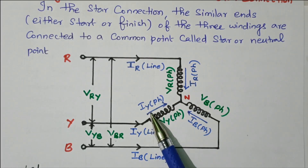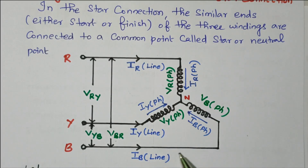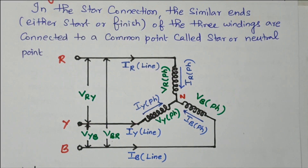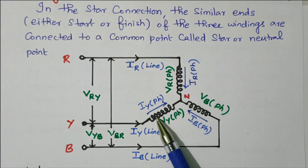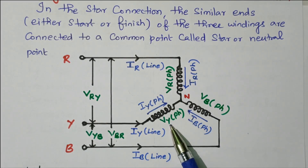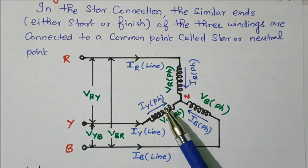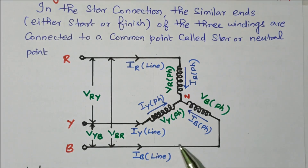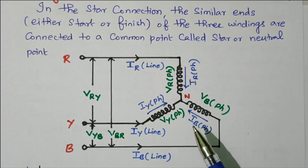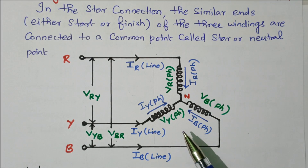Similarly, IY phase and IB phase correspond to their respective line currents. In all cases, line current is equal to phase current. For voltage: VRY is the vector sum of VR phase and VY phase. Similarly, VYB is the vector sum of VY phase components. So in star connection, line current equals phase current, and the line voltage is the vector sum of phase voltages.